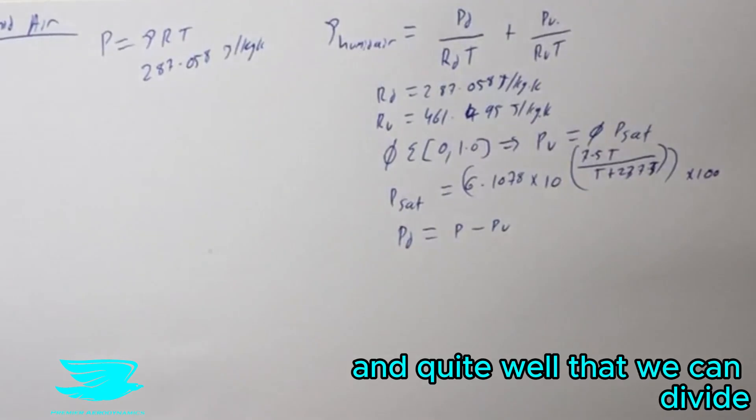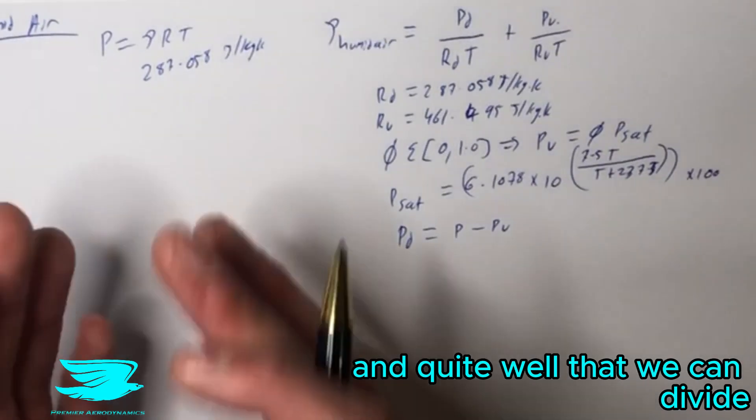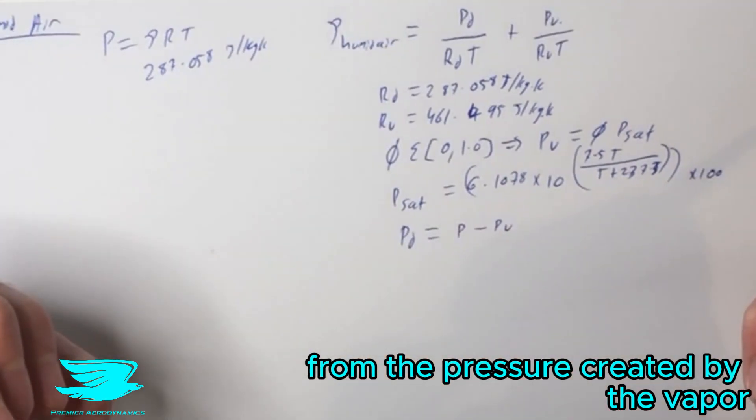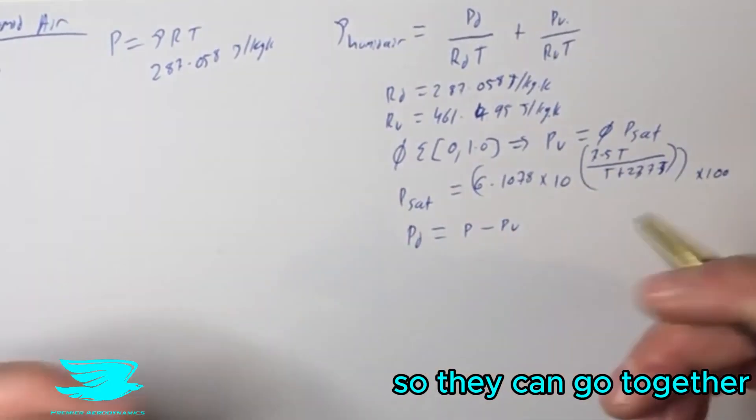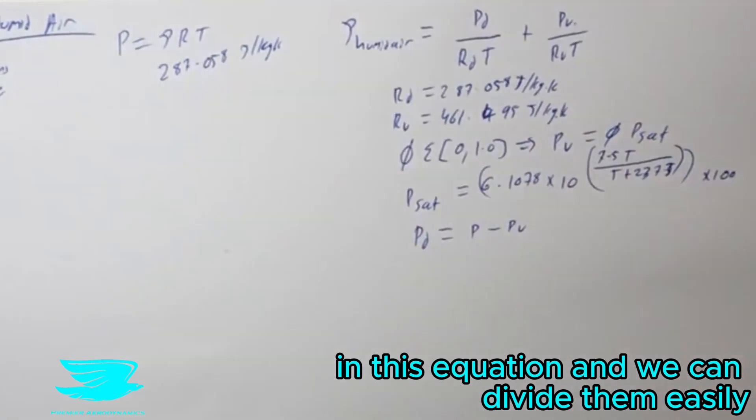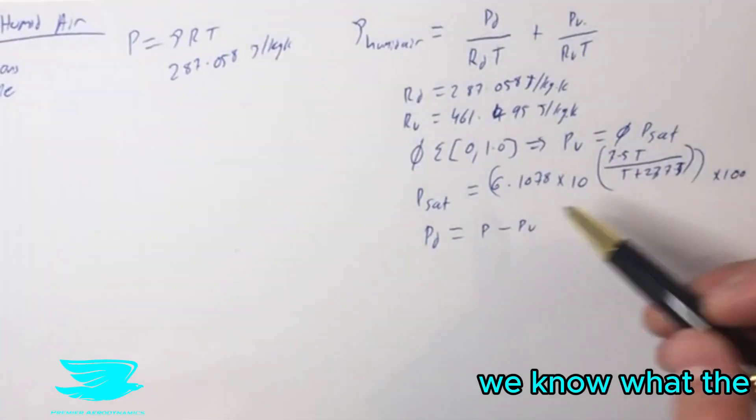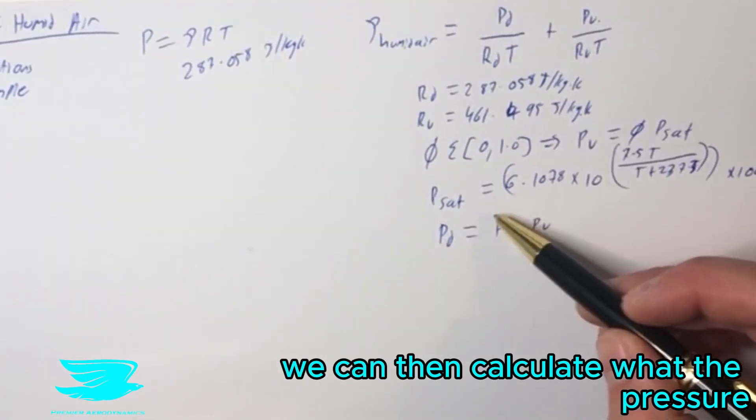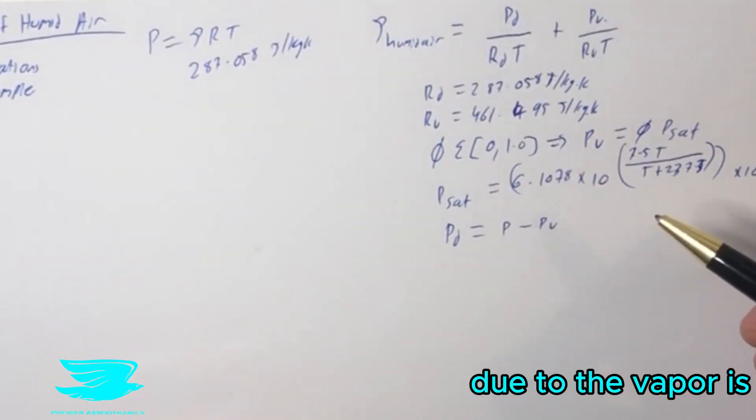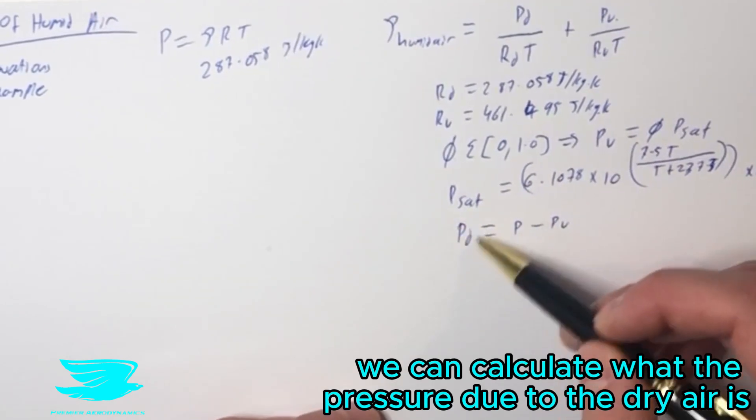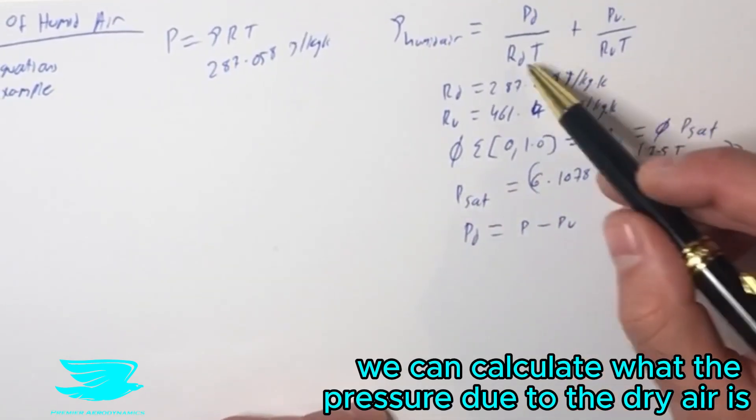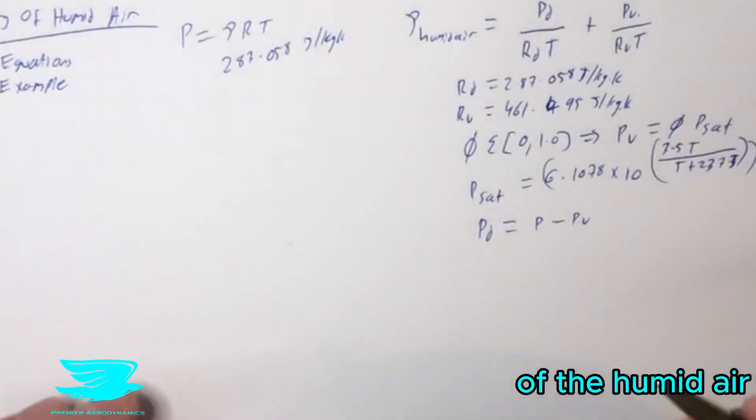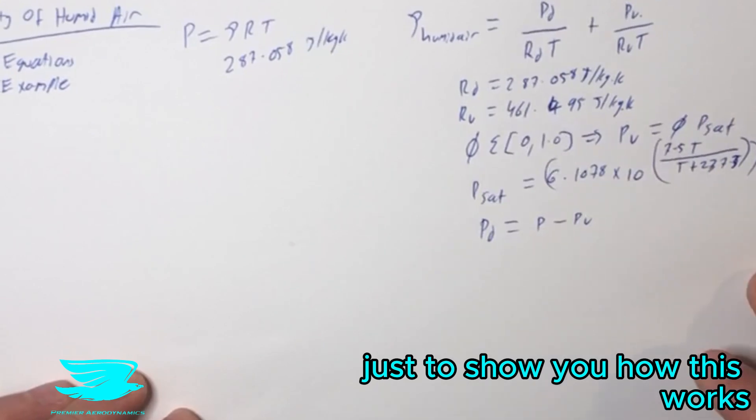This is because we've assumed, quite well, that we can divide the pressure based on that is being created by the dry air from the pressure created by the vapor. So by going through this process, we know what the pressure that we measured was for the entire air. We can calculate what the pressure due to the vapor is if we know the humidity. We can then calculate the pressure due to the dry air, factor all these in, and calculate the overall density of the humid air. Let's go through an example to show you how this works.